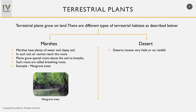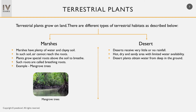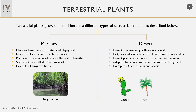Another terrestrial habitat is deserts. Deserts receive very little or no rainfall. Deserts are hot, dry, and sandy areas with limited water availability. Desert plants obtain water from deep in the ground and are adapted to minimize water loss from their body parts. Cactus, palm, and acacia are examples of desert plants.